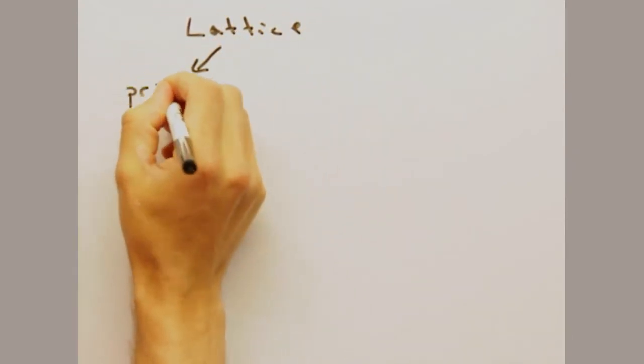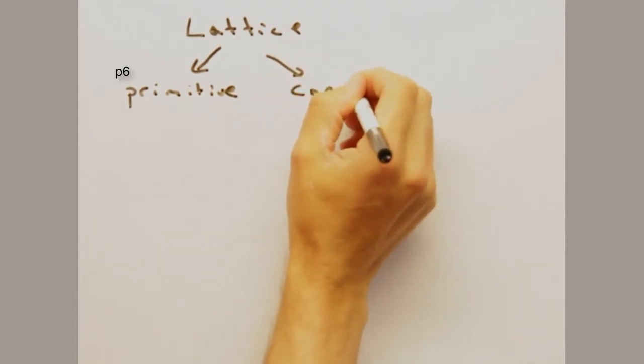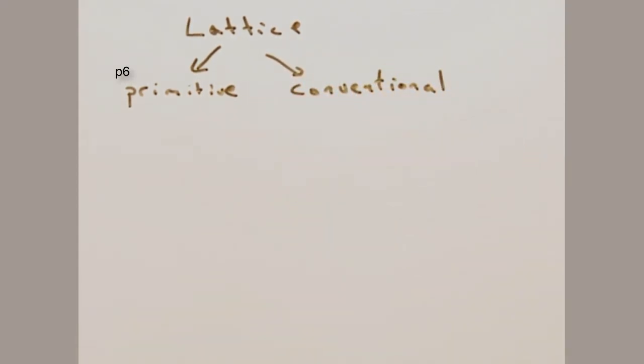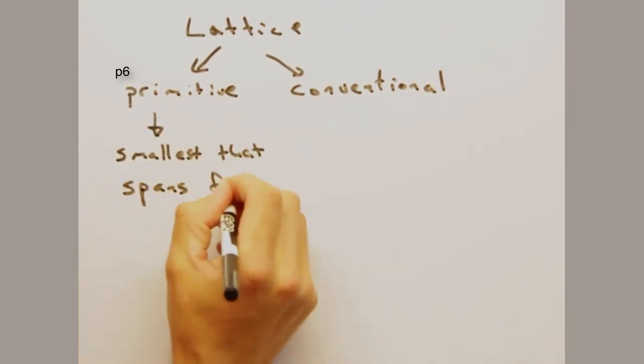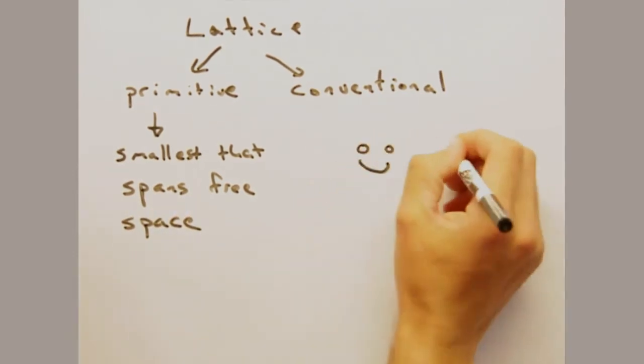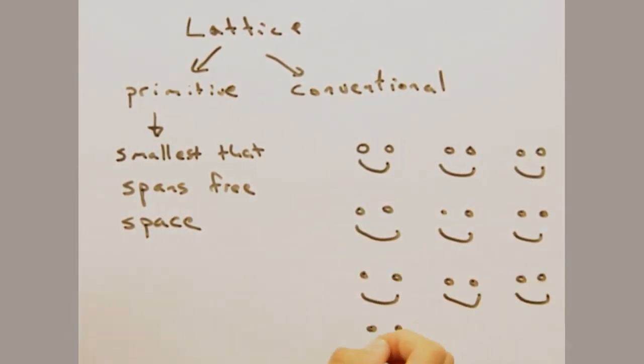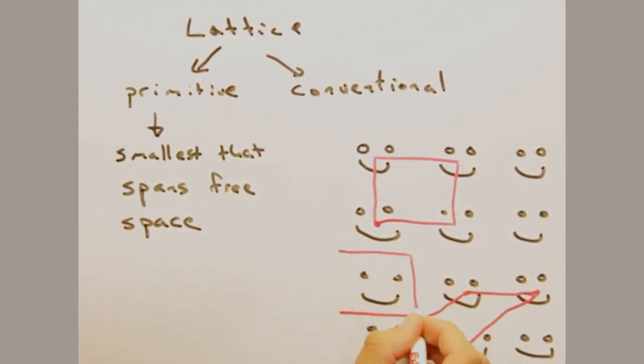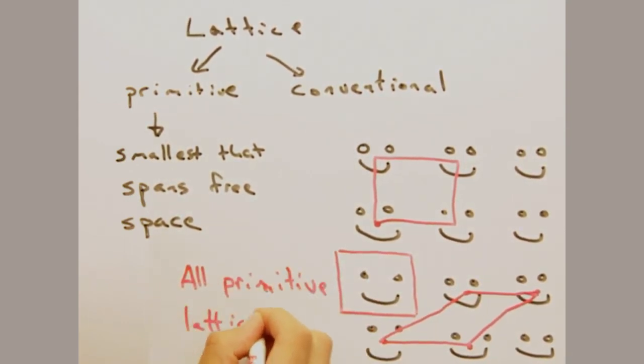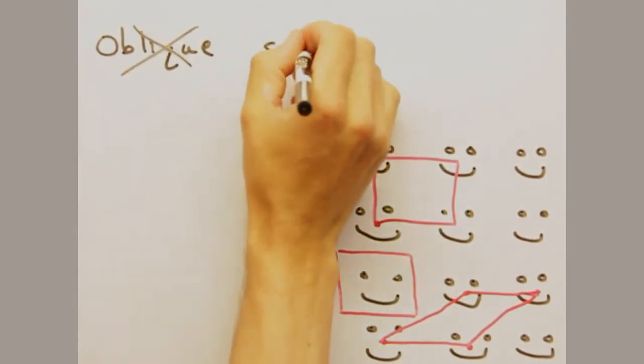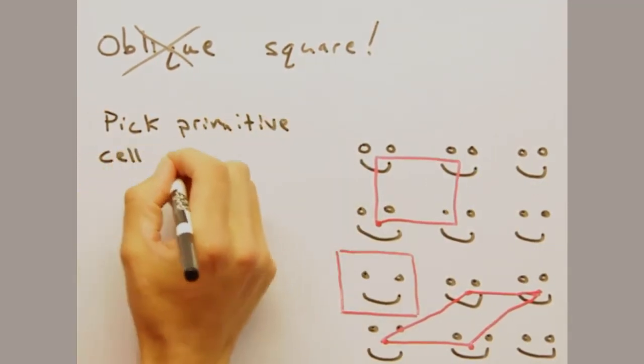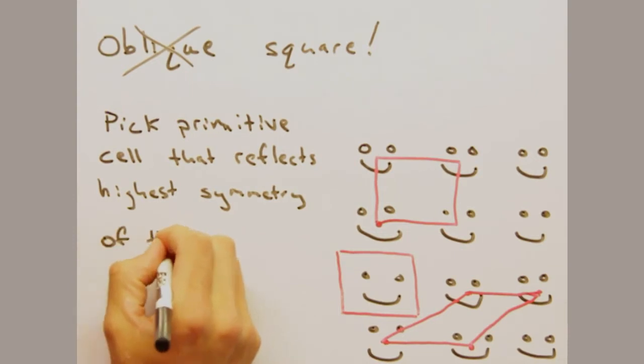Let's look back at it. Typically in solid state, we either talk about the primitive or conventional lattice. The primitive lattice is the smallest area or volume cell that still spans free space upon translation. So if you had a lattice as so, you can imagine choosing vectors A1 and A2, but you could also choose A1 and A2 like so as a different but equally valid primitive cell. Because we can choose any primitive cell, one should be careful. The whole point of the lattice is to reflect the highest symmetry of the system. So one could choose this oblique lattice, but it wouldn't make any sense compared to choosing the square.